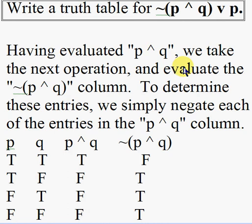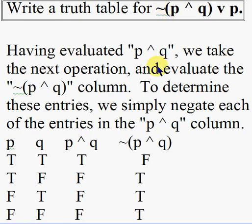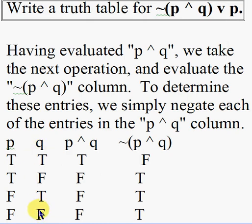We do the part in the parentheses first, just like in algebra. Now having evaluated P AND Q, we take the next operation. Note that it's not simply left to right — we're using PEMDAS, so we need to evaluate NOT next: the NOT(P AND Q) column. To determine each entry, we simply negate each of the entries in the P AND Q column.